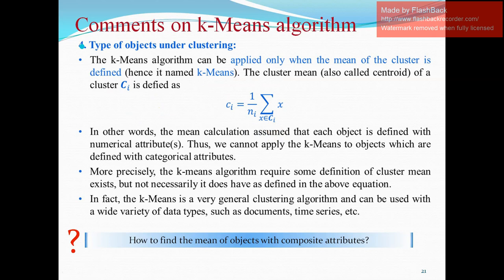Types of objects under clustering. K-means can be applied only when the mean of the cluster is defined, as it names K means, that the cluster mean of a cluster CI is defined as ci equals 1 divided by NI, then summation of x, x belongs to CI. In other words, the mean calculation assumed that each object is defined with numerical attributes. Thus, we cannot apply the K means to objects which are defined with categorical attributes. In fact, the K means is a very general clustering algorithm and can be used with a variety of data types such as documents, time series etc.